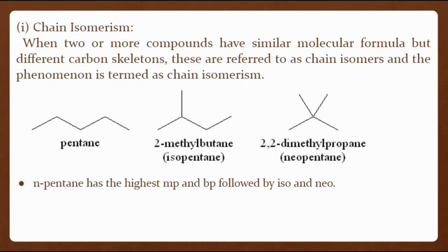The first type of constitutional isomerism is chain isomerism. When two or more compounds have similar molecular formula but have different carbon skeletons, these are referred to as chain isomers and the phenomenon is termed chain isomerism. An example is the three isomers of pentane: n-pentane, 2-methylbutane or isopentane, and 2,2-dimethylpropane or neopentane. The melting and boiling points of alkanes are relatively low. The higher the molecular weight, the greater the number of carbons and the higher the melting point. If two alkanes have the same formula weight differing only in connectivity due to branching, the one with more extensive branching has a lower boiling point because branching prevents the molecules from being packed together as tightly as in a straight chain. This results in weaker intermolecular forces and therefore a lower boiling point.